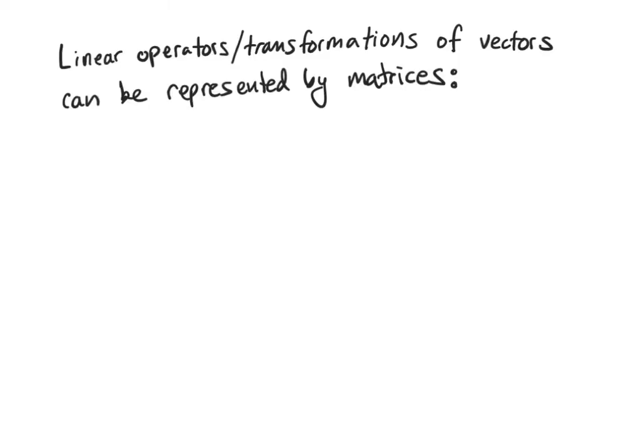You're already aware of examples of linear operators that act on vectors. Can you think of anything that takes one vector and turns it into another? We call those matrices. A matrix times a vector gives us another vector.